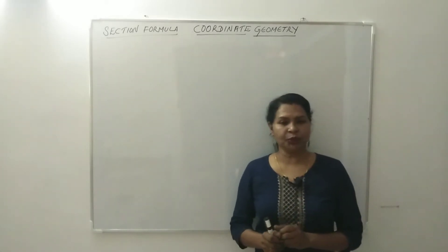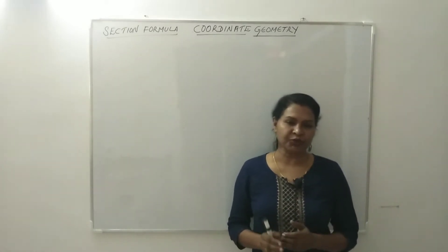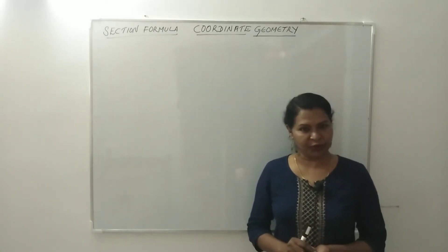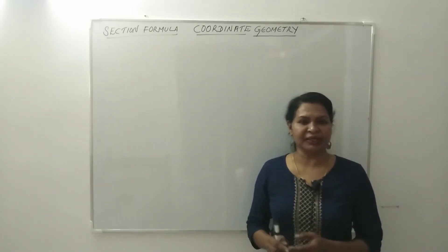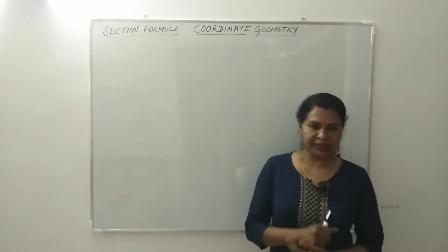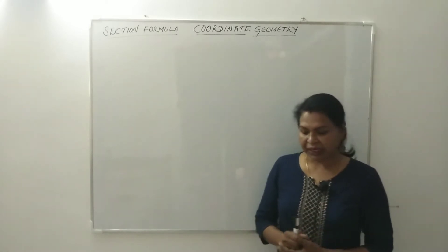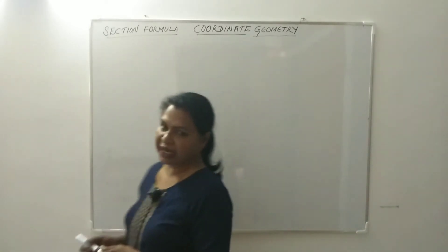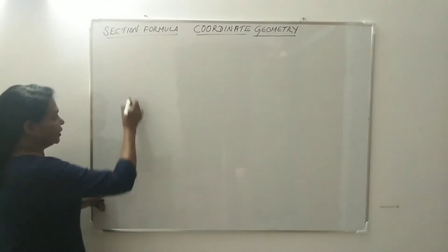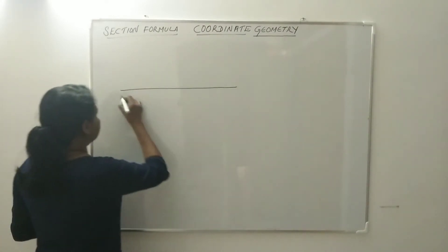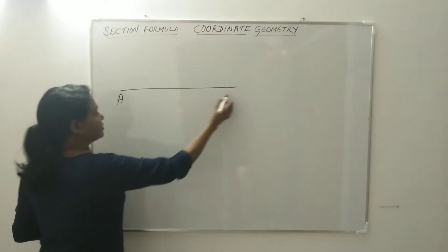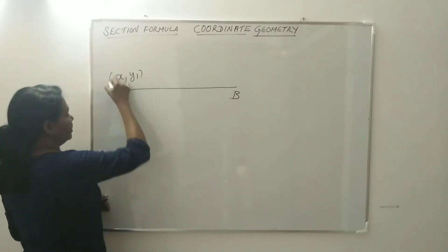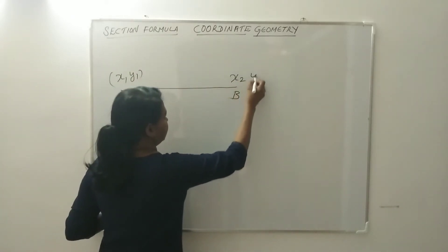Now, you don't have to know the section formula — section formula is already explained. What is the section formula? What is the purpose? Section formula: if I have a line segment AB with the coordinates x1, y1 and x2, y2.